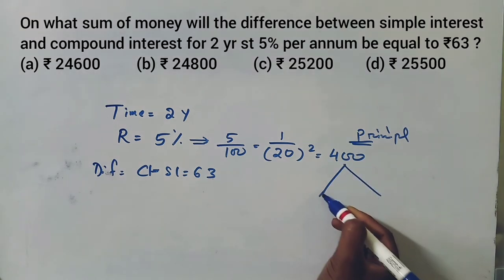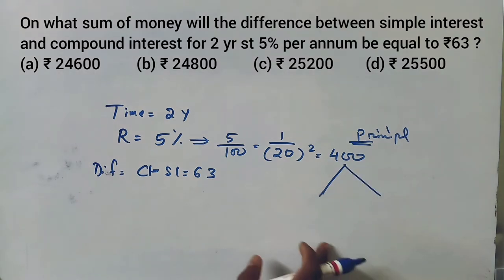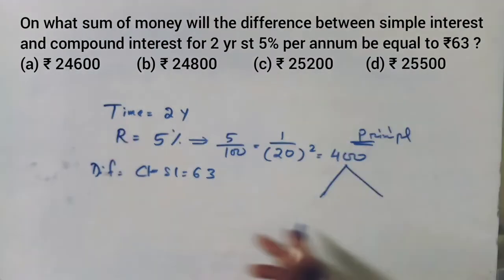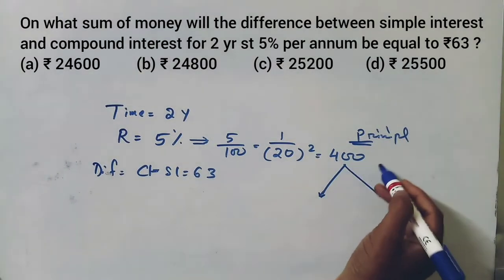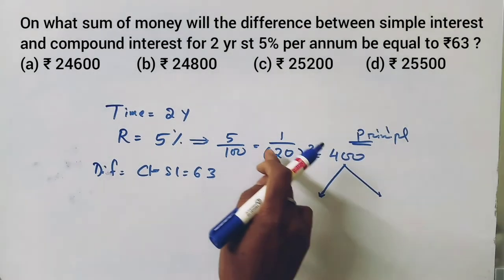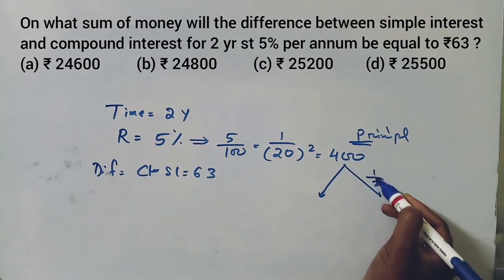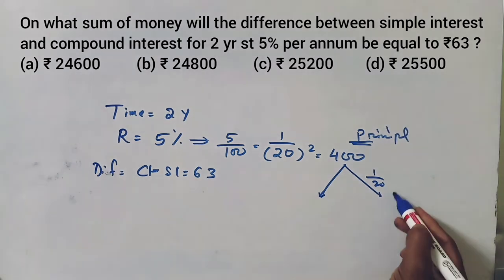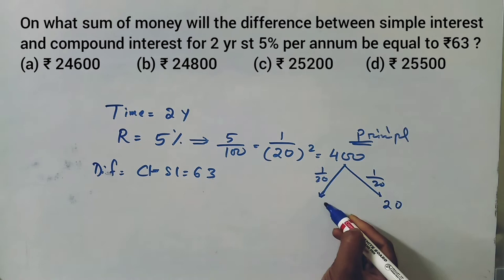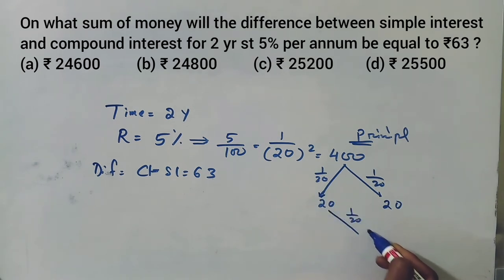The formula is 1 by 20 times 1 by 20 times 4 by 100 equals principal. Okay, the difference between CI and SI equal to 1, 1 value is 63, 4 value is 63.